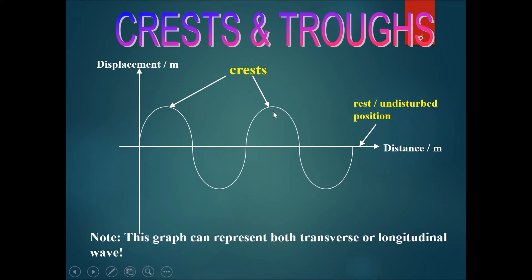These points, which are the highest points of the waves, we call them the crests. And these points, which are the lowest points of the waves, we call the troughs.